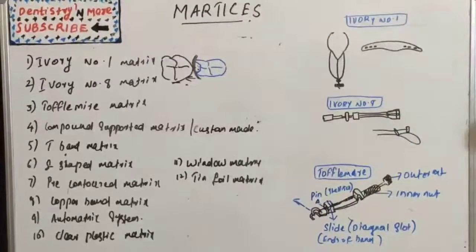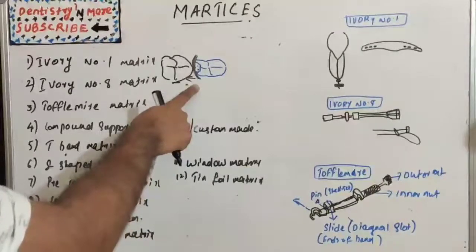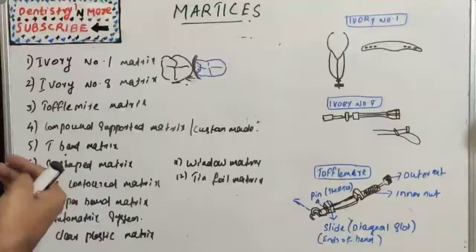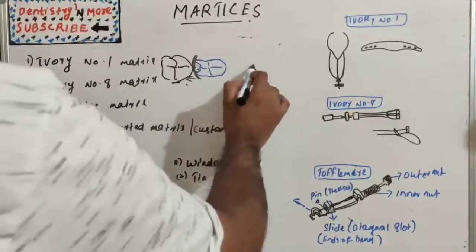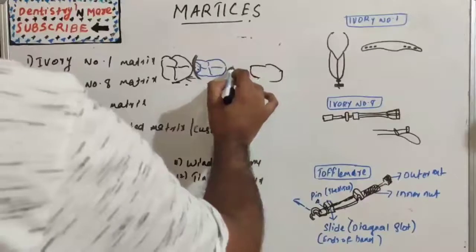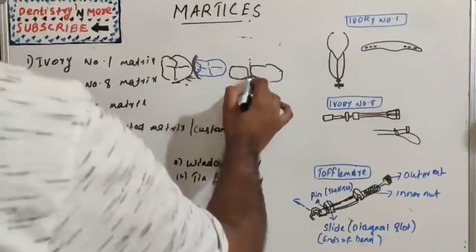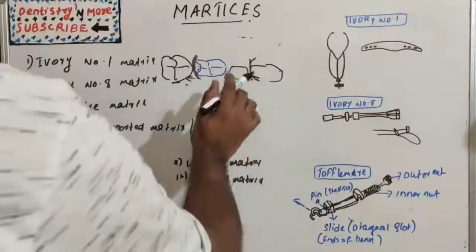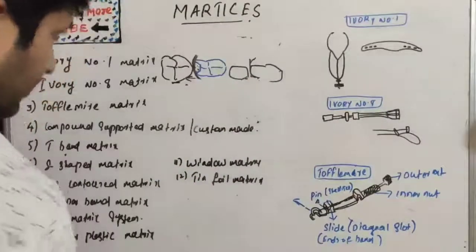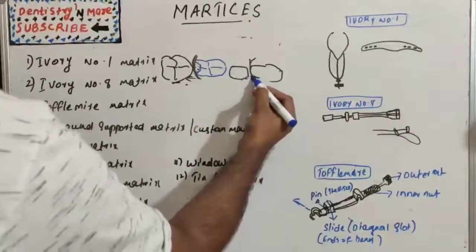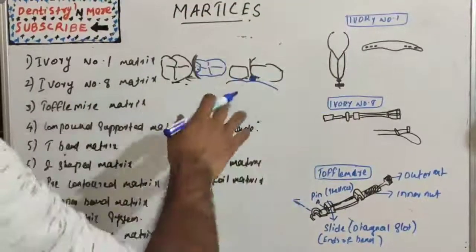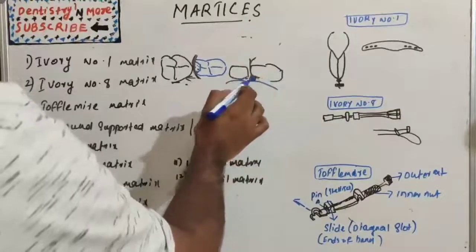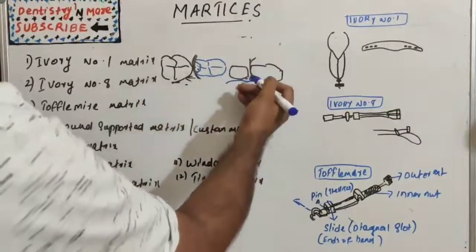The functions of a matrix are: to confine the restorative material while it is hardening, to establish the optimal contact and contours of the restoration, to prevent gingival overhangs of restoration, and to provide acceptable surface texture for the restoration. If the matrix is not properly placed, there will be gingival overhangings of the restoration.